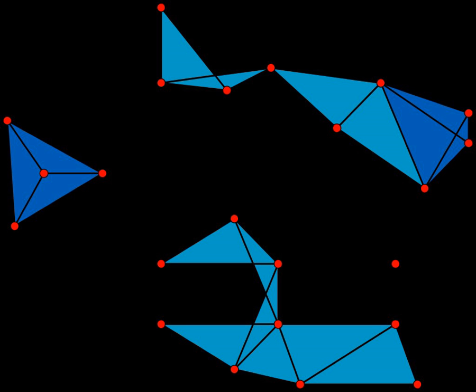A maximal clique is a clique that cannot be extended by including one more adjacent vertex, that is, a clique which does not exist exclusively within the vertex set of a larger clique.